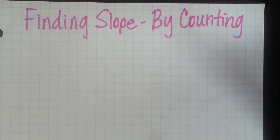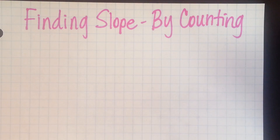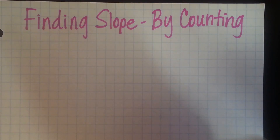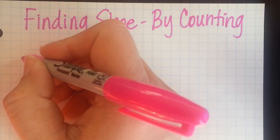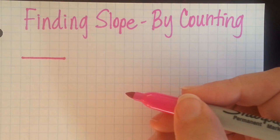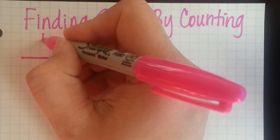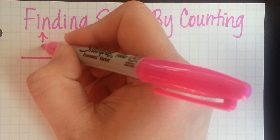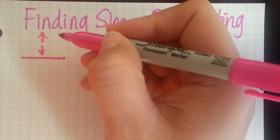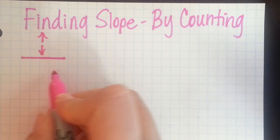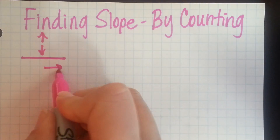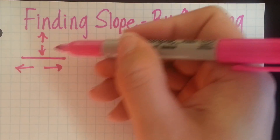This video is helping us find slope by counting. Remember back when we started doing this, we said most of the time our slope was going to be written as a fraction. The top number was going to tell us whether to go up or down, and the bottom number was going to tell us whether to go left or right.